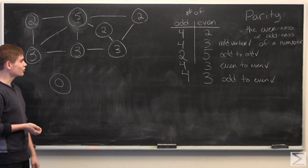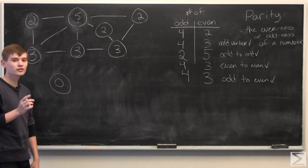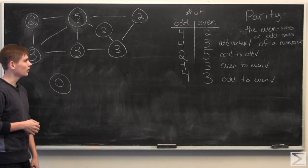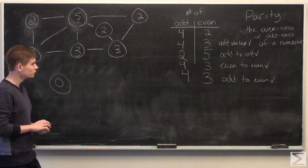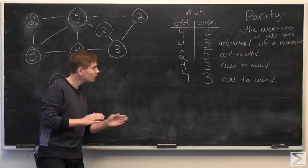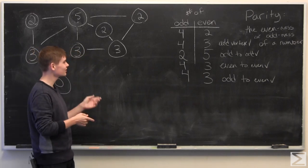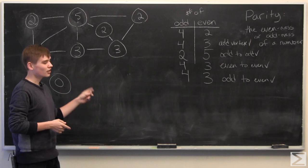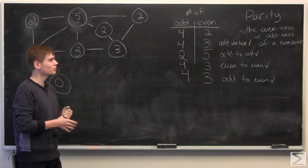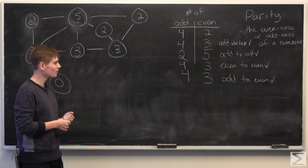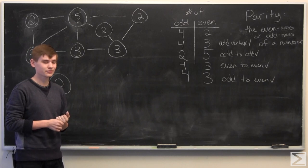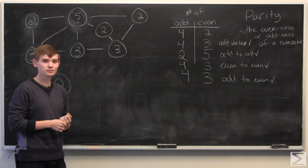And therefore, there is no possible way to get an odd number of odd vertices. And so you've shown that the number of odd vertices in a graph will always be even, which is probably something you've never considered before. But it's true.